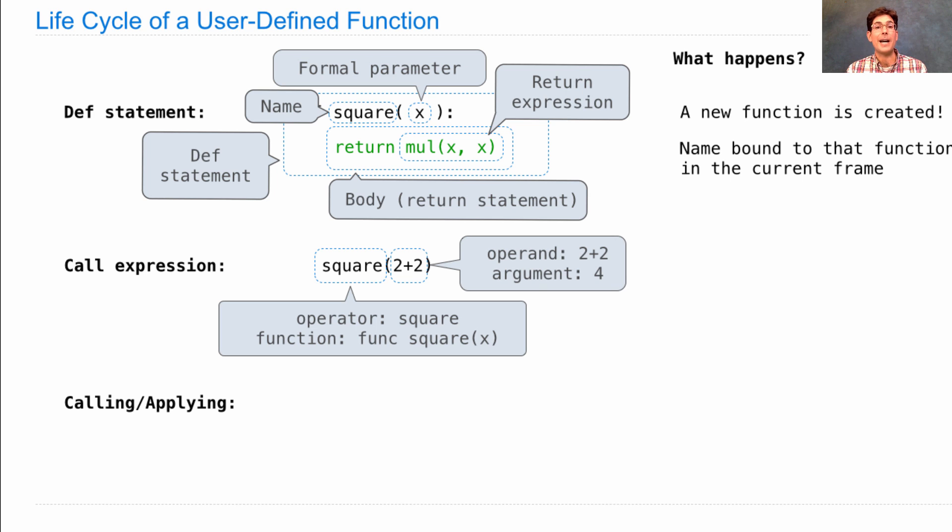Inside the parentheses go the operands. The operands are expressions. So the operand is two plus two. The argument that gets passed to the function is a value, which you get by evaluating the operand expression. So I actually add two and two together. I get four, and that gets passed into the function that squares, that we just defined. When we see a call expression and we want to evaluate it, here's what happens. The operator and operand sub-expressions are evaluated. Then the function that we got from the operator is called on the arguments that we got from the operands.